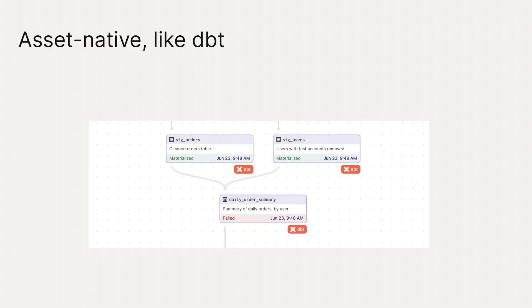Like dbt, Dagster puts data assets at the center. Dagster pipelines are graphs of connected data assets. This means that Dagster can understand a dbt project at a really deep level. When you use Dagster's dbt integration to load your dbt project into Dagster, you get a faithful representation of your dbt models and the connections between them inside Dagster. And unlike other orchestrators, Dagster doesn't need to run each dbt model in a separate task, which incurs a lot of overhead.